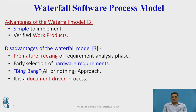Premature freezing of the requirement analysis phase means requirements are fixed once all are collected, leaving no scope for addition of new requirements. This is unrealistic for new projects where no existing system is available. Early selection of hardware means the hardware selected in the early stage may become obsolete when the final project is ready. The big bang approach means the customer either gets the full complete project or nothing. Also, the document is verified at the end of each phase, which incurs additional cost.